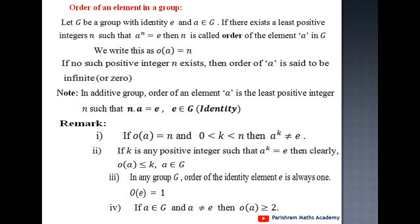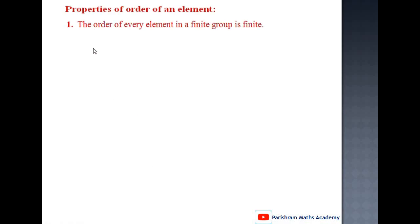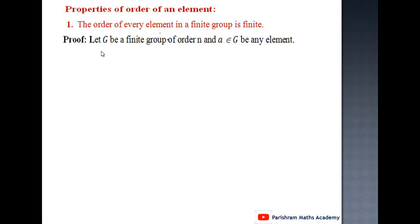Properties of order of an element. First property: the order of every element in a finite group is finite. Proof: Let G be a finite group of order n and let a be any element belonging to G. We have to prove that the order of a is also finite. Since G is a finite group, we claim that order of a is finite.